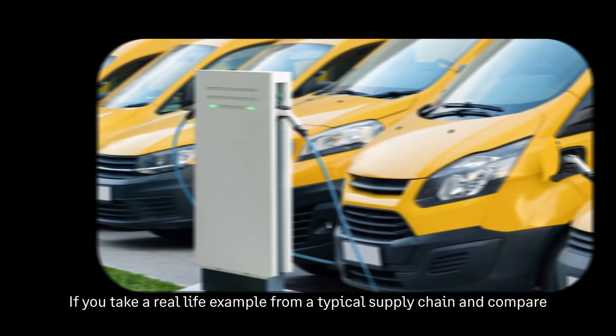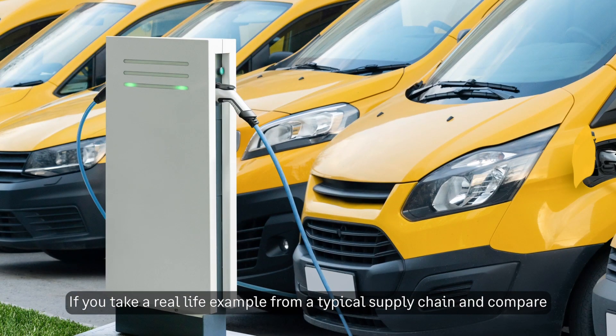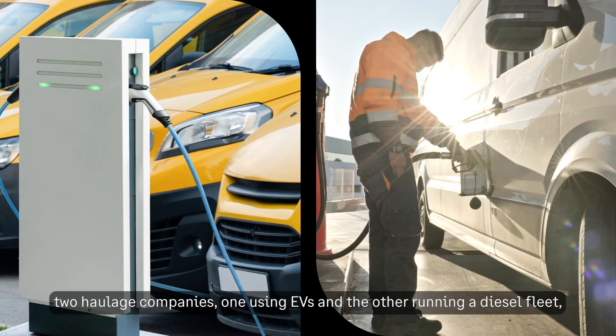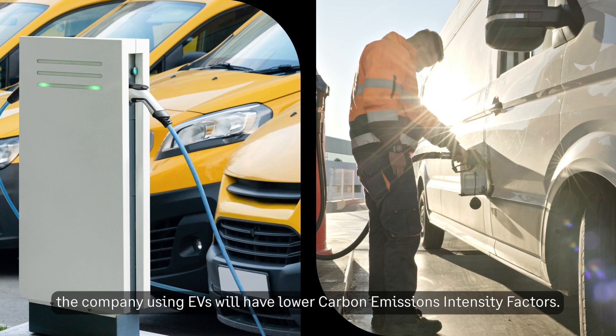If you take a real-life example from a typical supply chain and compare two haulage companies, one using EVs and the other running a diesel fleet, the company using the EVs will have lower carbon emission intensity factors.